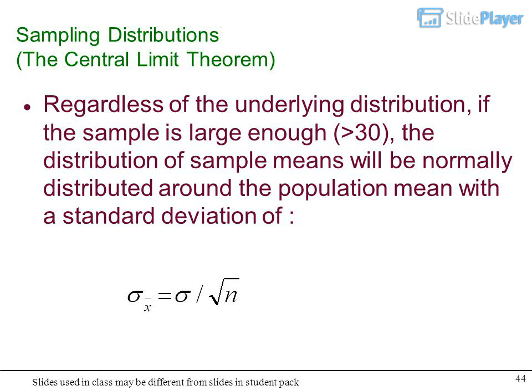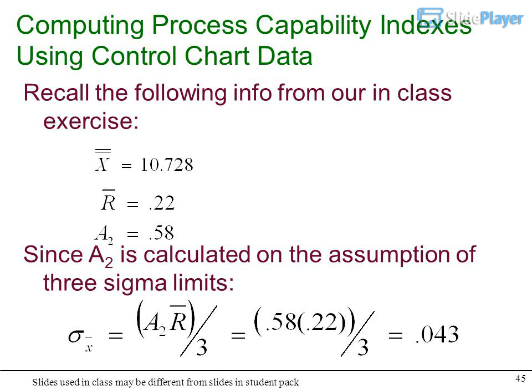Sampling distributions: The Central Limit Theorem. Regardless of the underlying distribution, if the sample is large enough, greater than 30, the distribution of sample means will be normally distributed around the population mean with a standard deviation computed from the population.